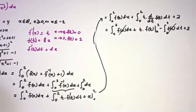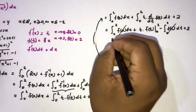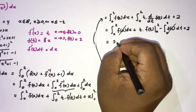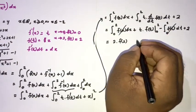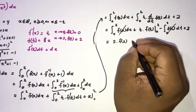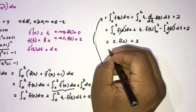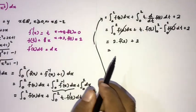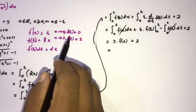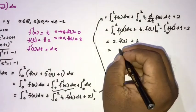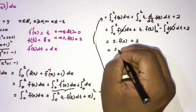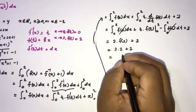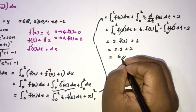After cancellation, we are left with t times f(t) evaluated from 0 to 2, which gives 2 times f(2) plus 2. We know f(2) equals 2, so 2 times 2 plus 2 equals 6. The answer is 6.